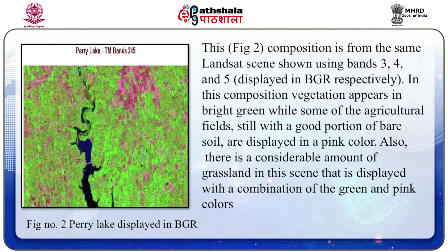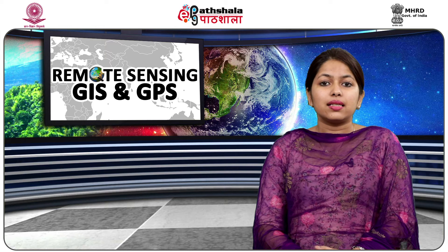This composition shown is from the same Landsat scene using bands 3, 4, and 5 respectively displayed in BGR. In this composition, vegetation appears in bright green, while some agricultural fields still with a good portion of bare soil are displayed in pink. There is also a considerable amount of grassland in the scene displayed with a combination of green and pink colors. By examining this second composition, the land use patterns can be seen quite well.